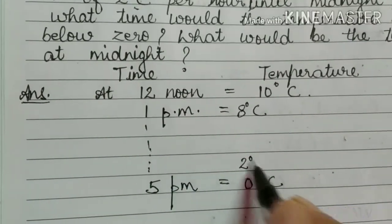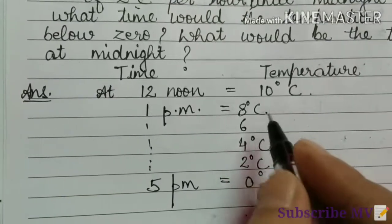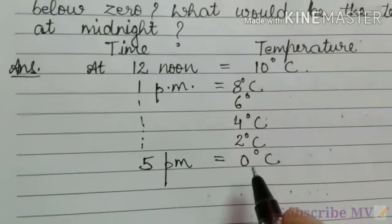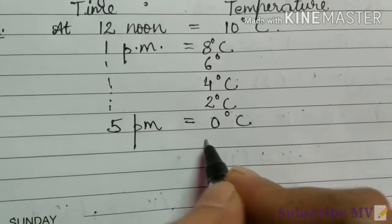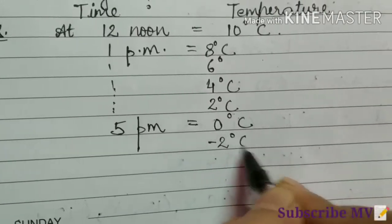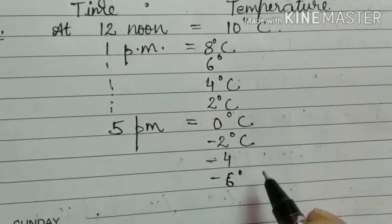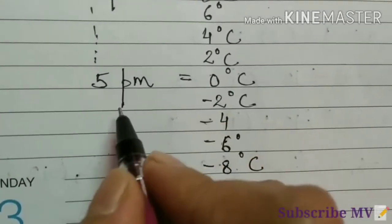You can see here 2, here 4, here 6. At the rate of 2 degree, it is decreasing. Now we have to find minus 8 degree at what time? After this minus 2 degree, minus 4, minus 6, minus 8 degree Celsius. So what will be the time?